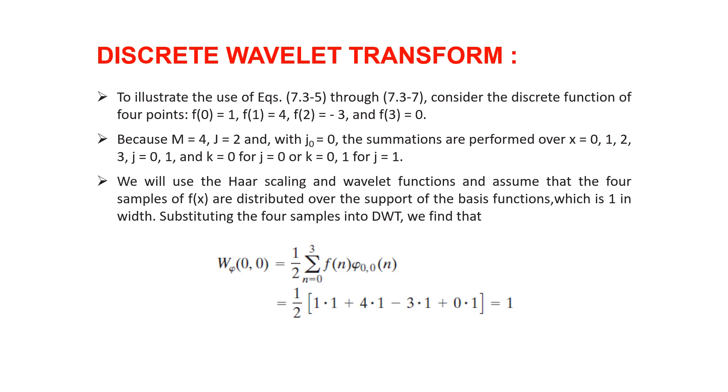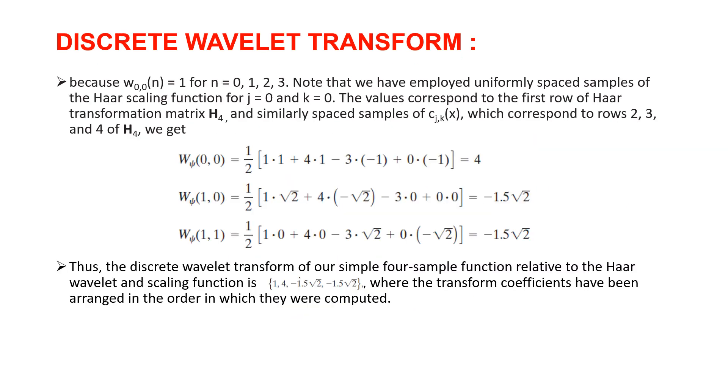First, we substitute the four samples into discrete Wavelet transform to find that the value will be 1. By taking j and k as 0, we got the value corresponding to the first row of the Haar transformation matrix as 1.